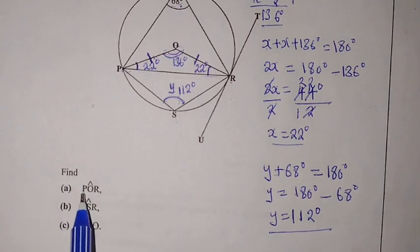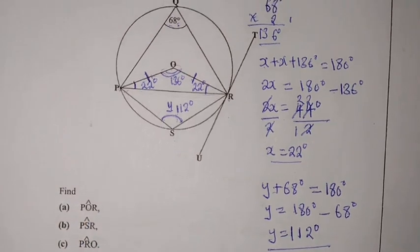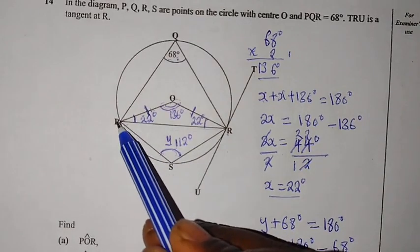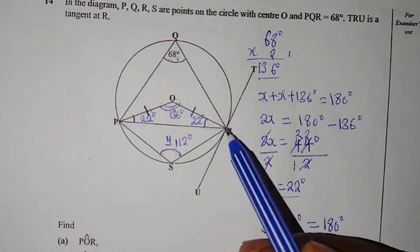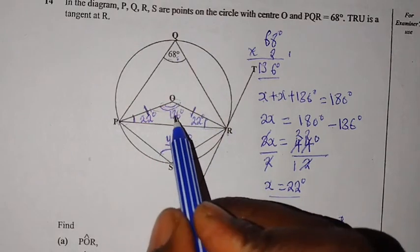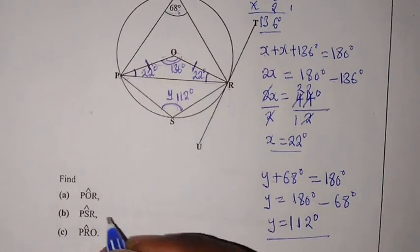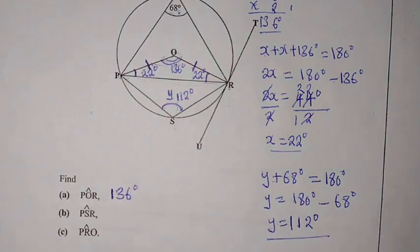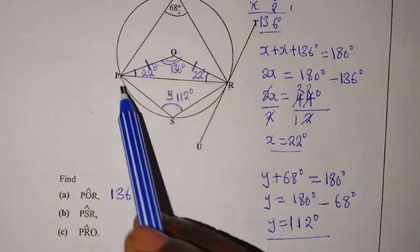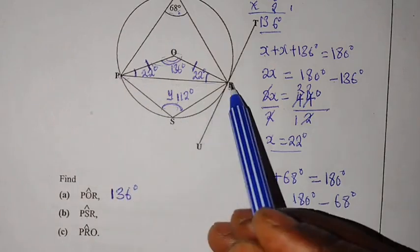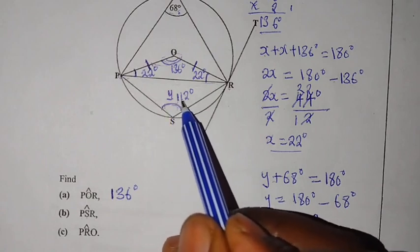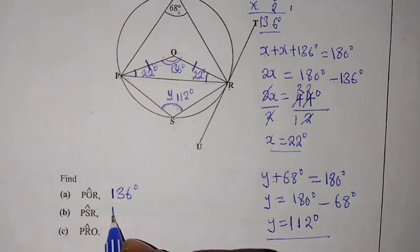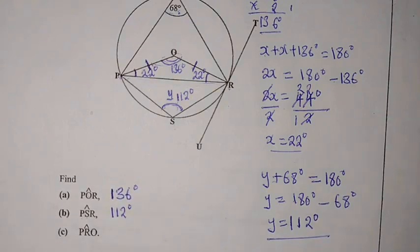Now, we can look at the questions. Find POR. So they want the angle which is on O. Come back to our diagram. POR. The angle which is here. What angle is that? 136 degrees. So here we have 136 degrees. Then we look at it. Find PSR. The angle at S. PSR. The angle which is right here. We have found that it's 112 degrees. So write 112 degrees.